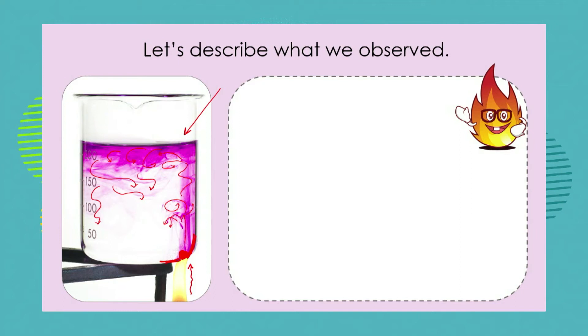So can we describe what we're observing now not just using descriptive words like swirls of purple and moving up and moving down. Can we use scientific language to describe what we're observing? So let's start.